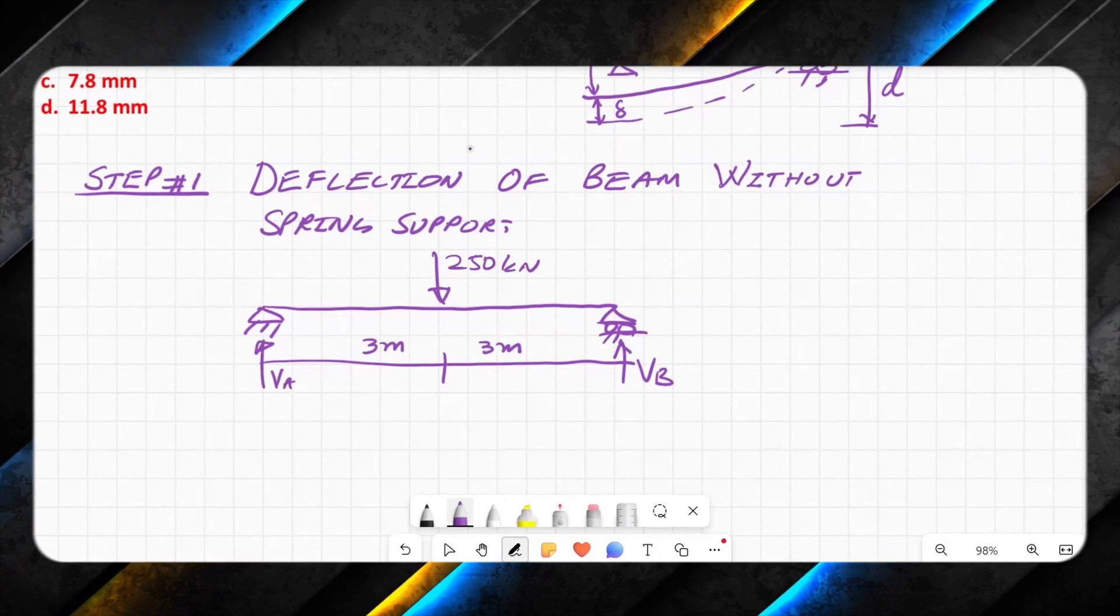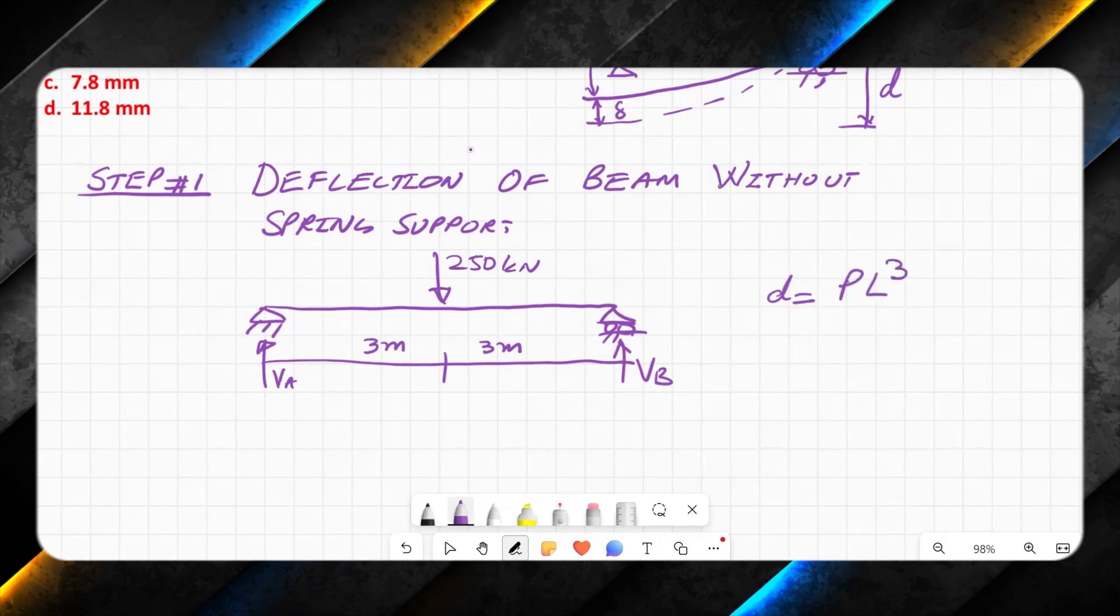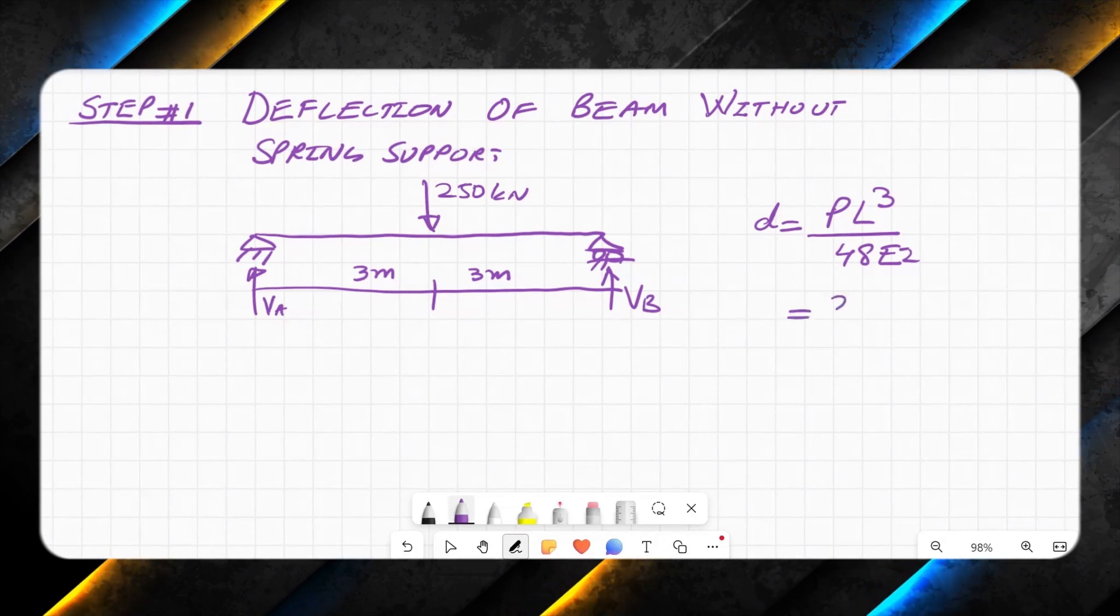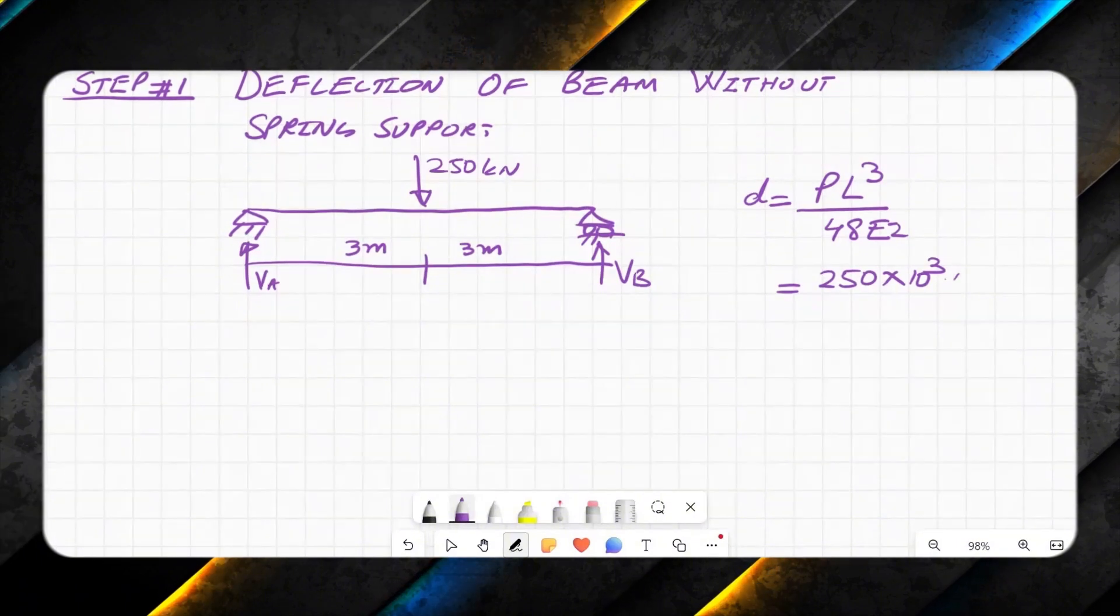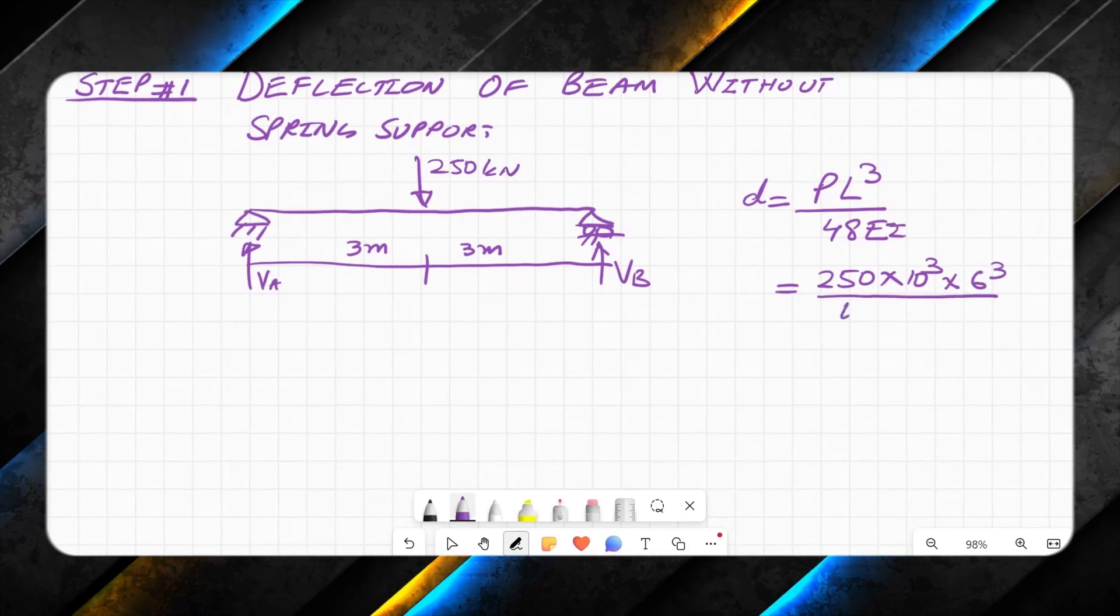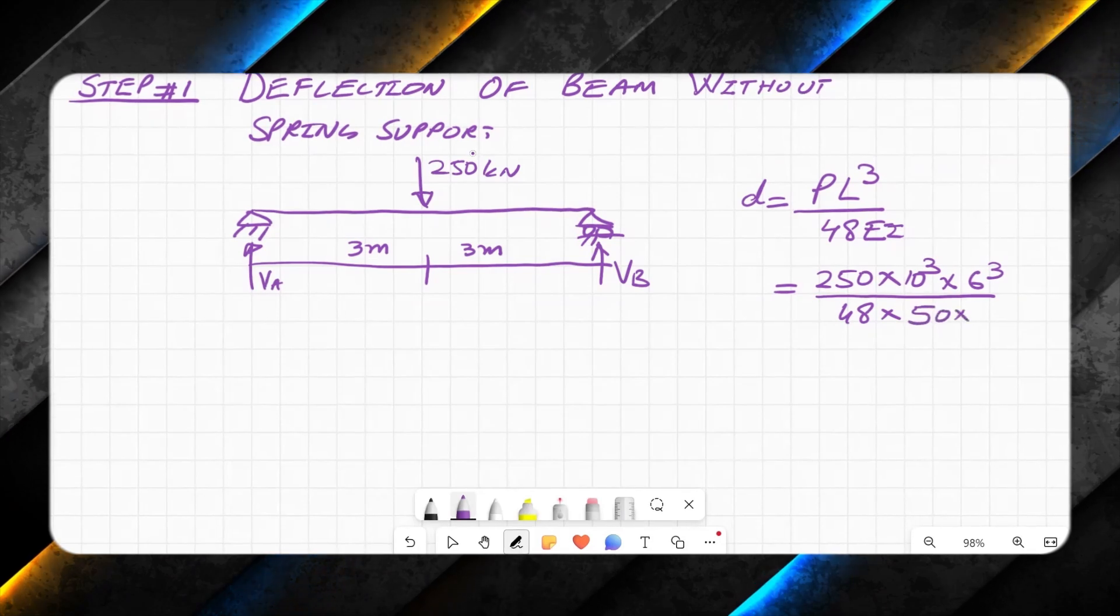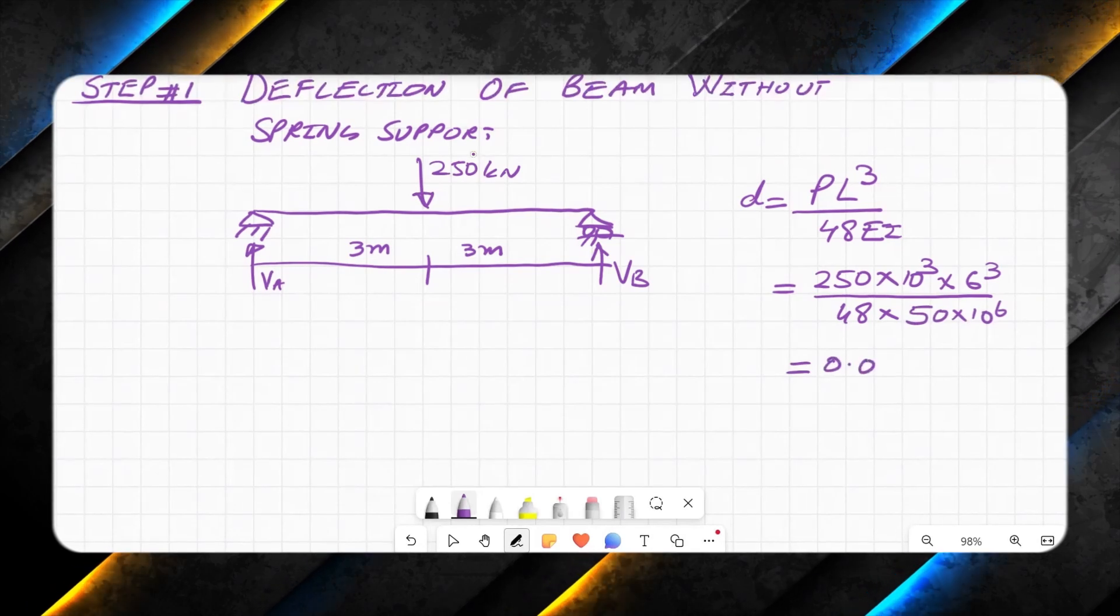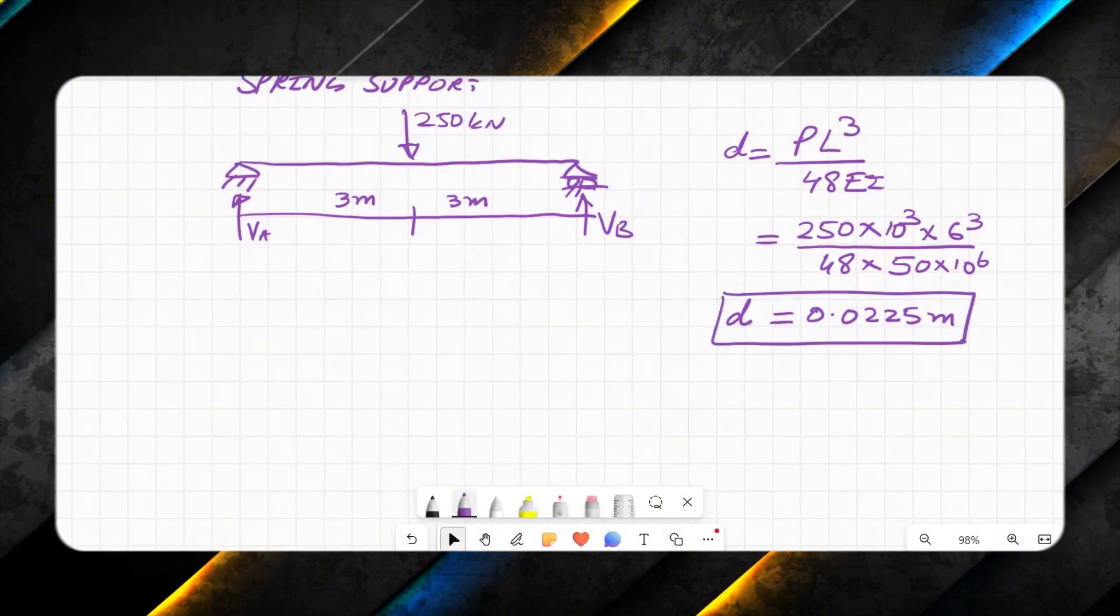So the formula for deflection is—I call it as d—is PL³ over 48EI. P is 250 times I convert it into newtons, and L is 6³ divided by 48 into EI, which is given as 50 × 10^6 newton meter. This will give me 0.0225 meters.